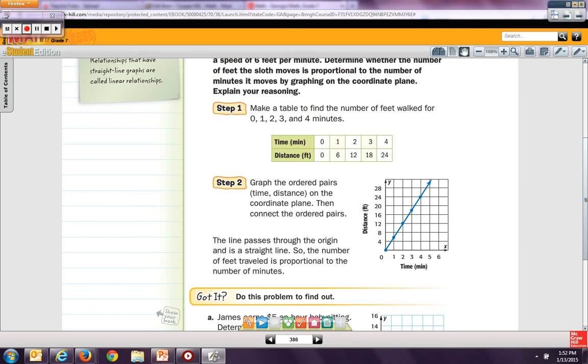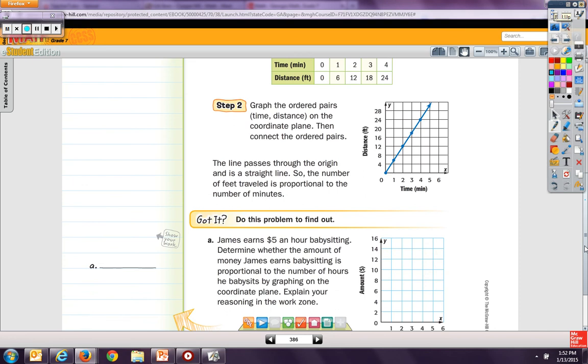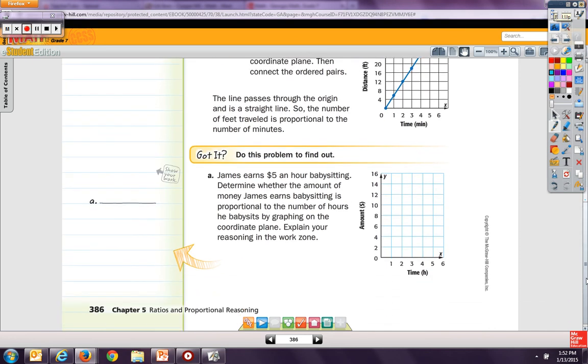So, let's go down and look at it. It says James earns $5 an hour babysitting. Determine whether the amount of money James earns babysitting is proportional to the number of hours he babysits by graphing on the coordinate plane. And explain your reasoning. So if he were to graph, he, but one hour, I'm going to make my table. So hours and money. Let's make our little graph. We'll do a couple points.